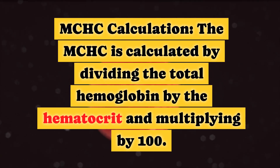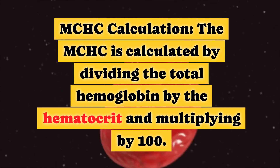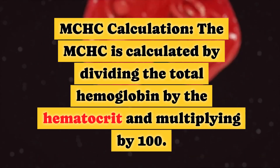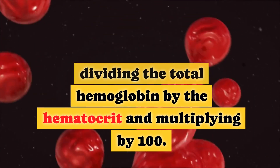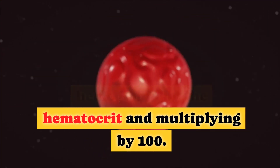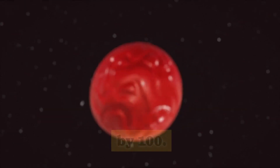MCHC Calculation: The MCHC is calculated by dividing the total hemoglobin by the hematocrit and multiplying by 100.